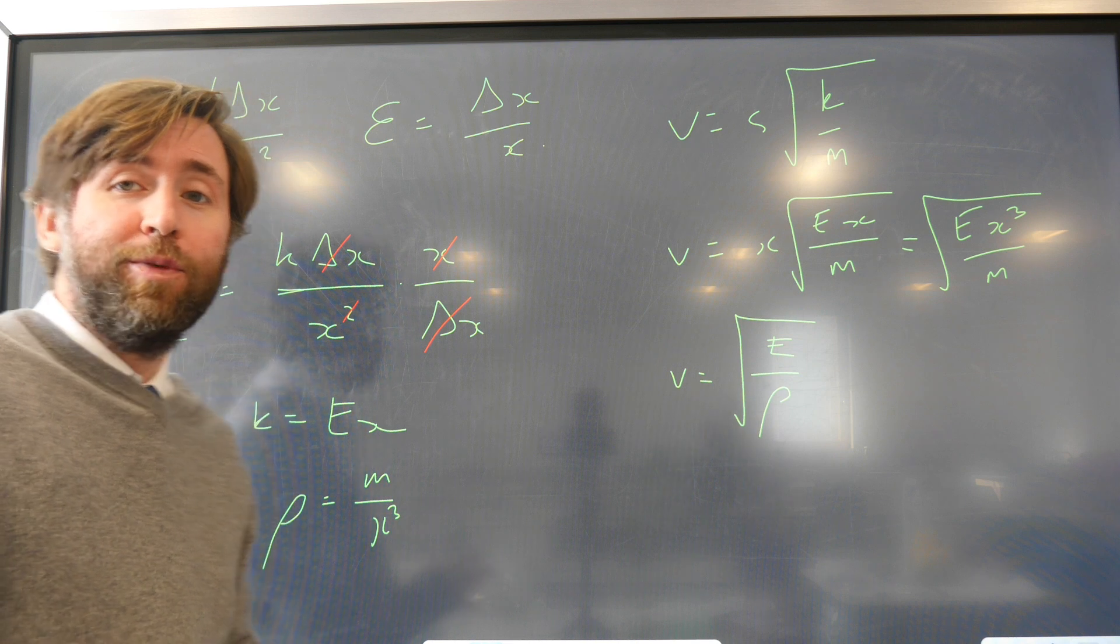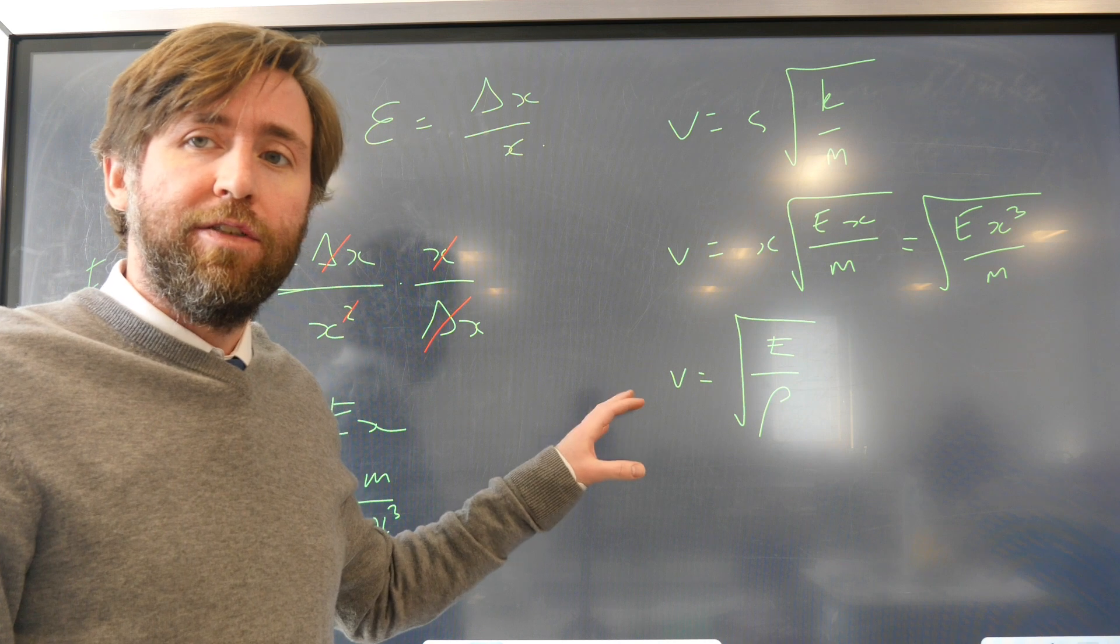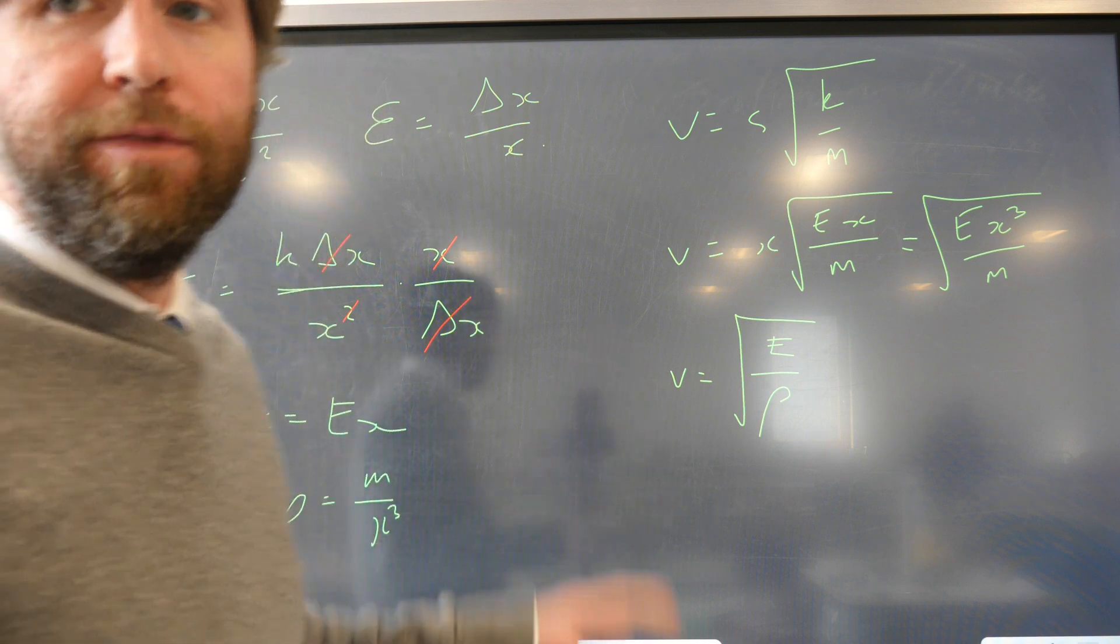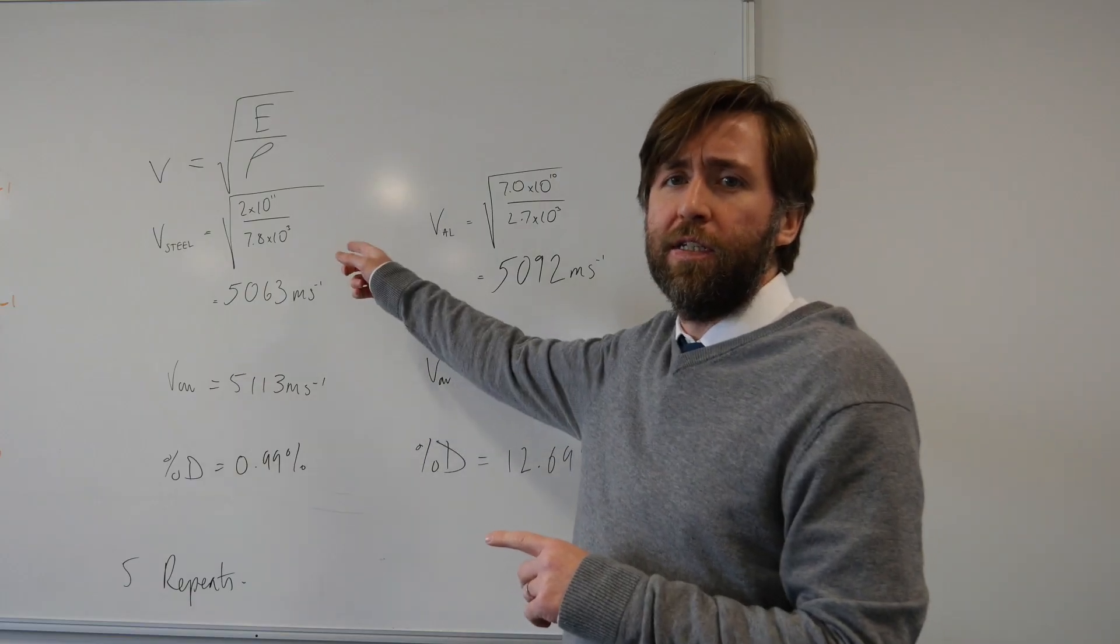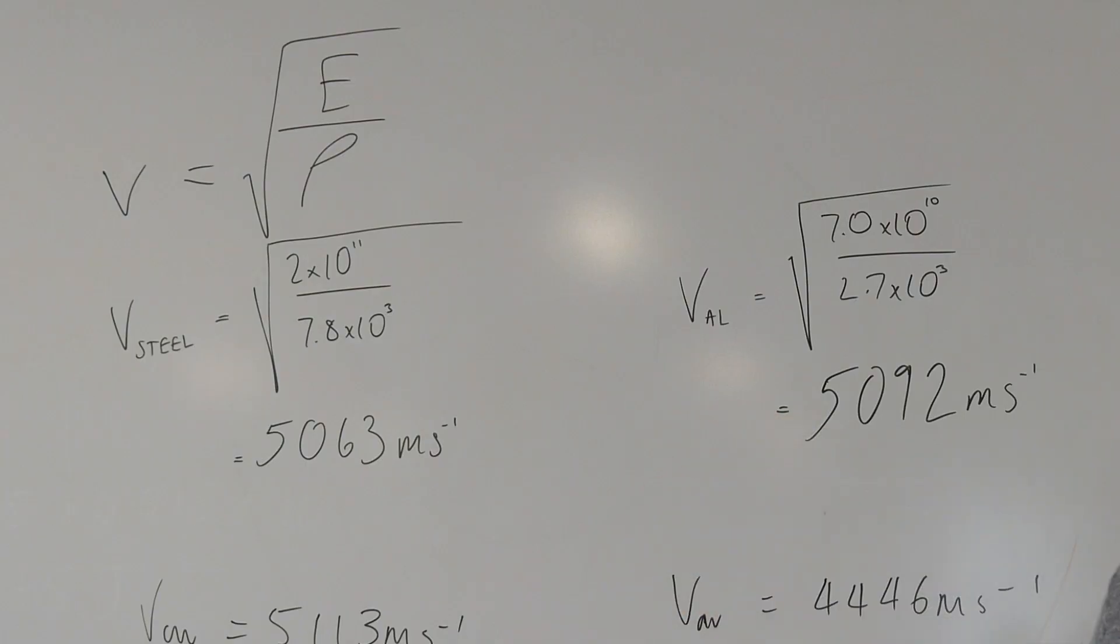So this is just some algebra to get us from Young modulus basically to an equation for speed in a solid. And then we've used that equation and the density of steel and aluminium and the Young modulus of steel and aluminium to work out their wave speed as it should be.